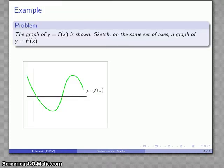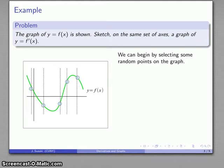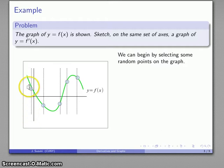Let's take a look at some problems. Here's the graph of y equals f of x, and we want to sketch on the same set of axes a graph of y equals f prime of x. Remember that the interpretation of the derivative is the slope of the line tangent to the graph. We'll begin by selecting some random points on the graph, with dotted lines to keep our two graphs aligned, so we can record the derivative at each particular point. The derivative is the slope of the tangent line, so we'll sketch a few tangent lines.